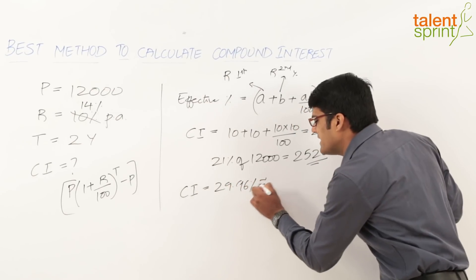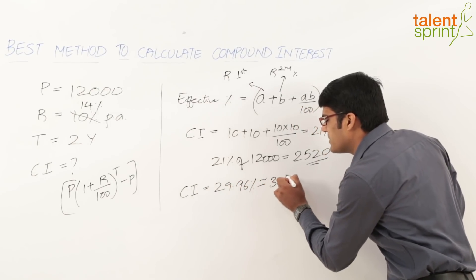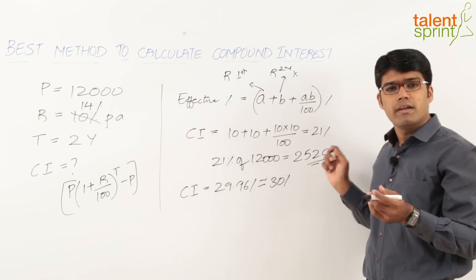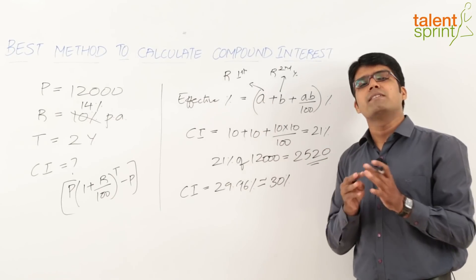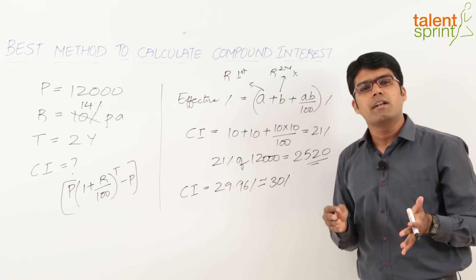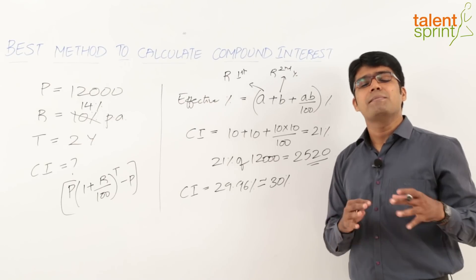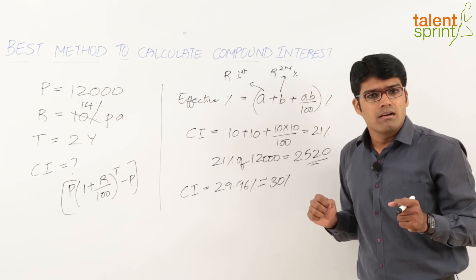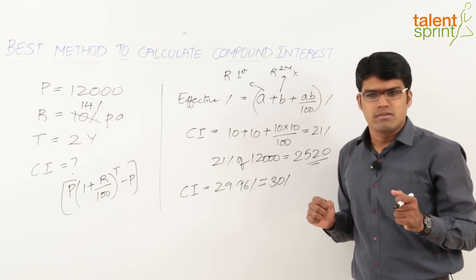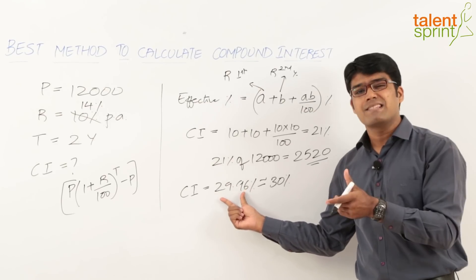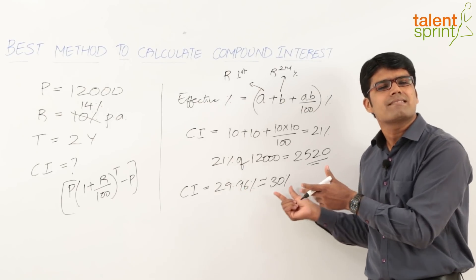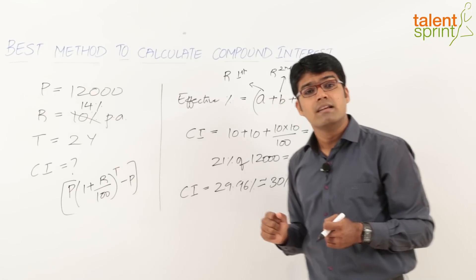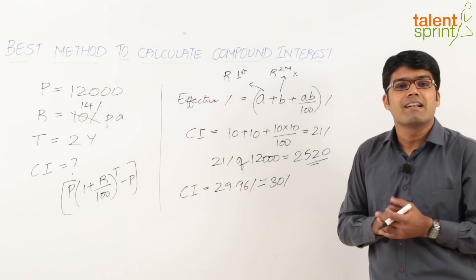So the compound interest is 29.96%, which can be approximately taken as 30% — as most of the time in competitive exams we can do an approximate calculation to arrive at the correct answer option. 30% of 12,000 is 3,600 rupees.